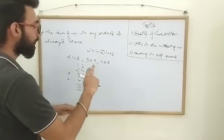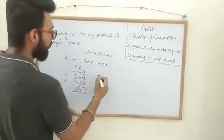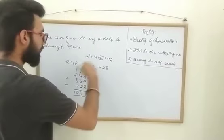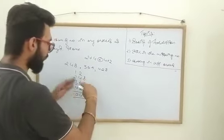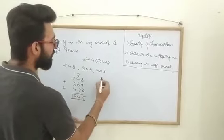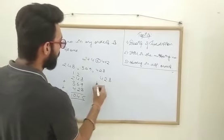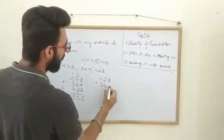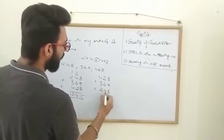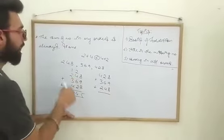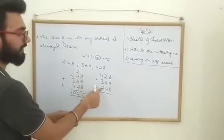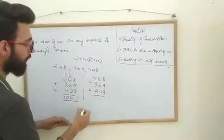Now we'll change the order. So the second order would be: we'll take this as the first number, 428. Second is 369. Third one would be 248. We switched it completely. The first number here is the last number here, so you can see the difference between them.